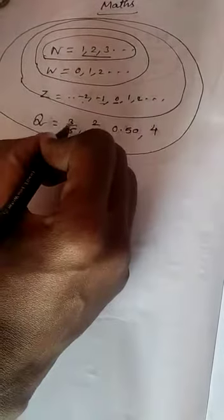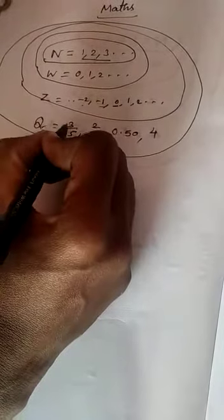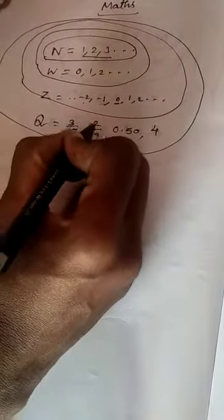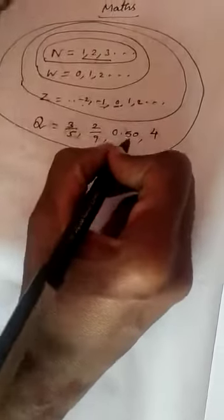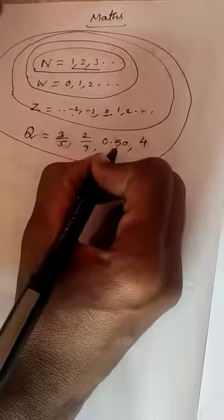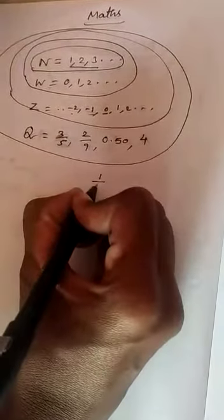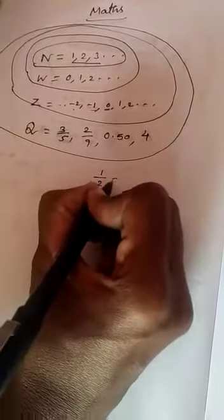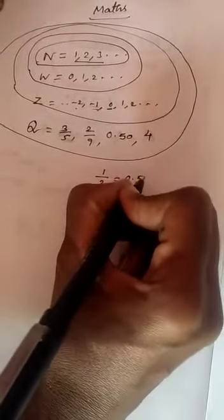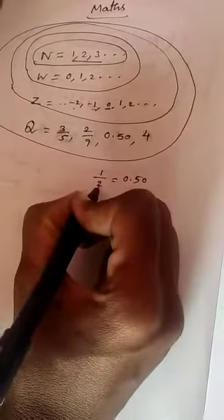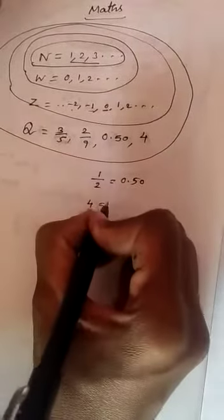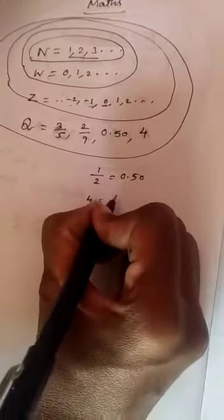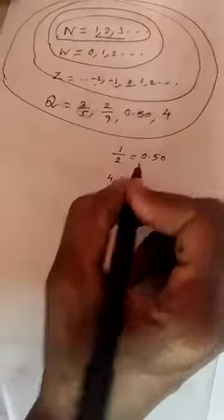Rational numbers are in fraction form: 3/5, 2/9. 0.50 is also a rational number. How? Because 1 divided by 2 equals 0.50. And 4 can also be written in rational format — how? 4 divided by 1.